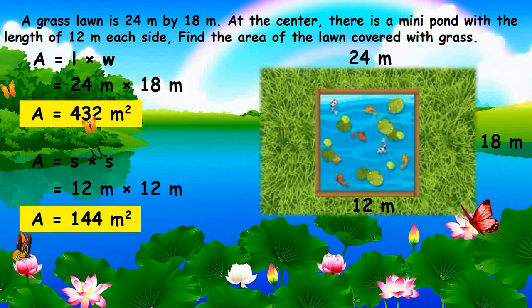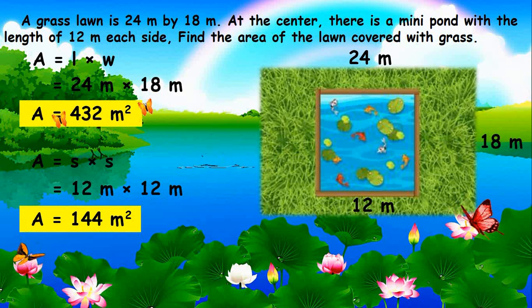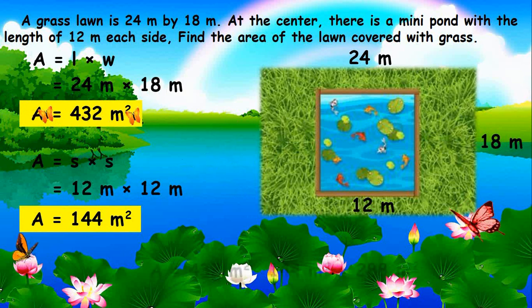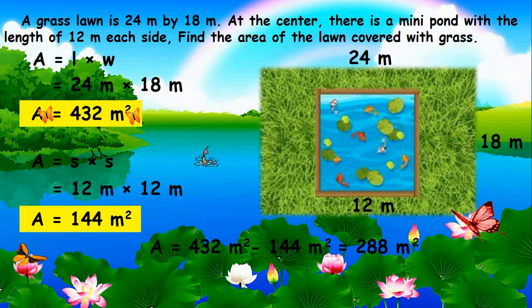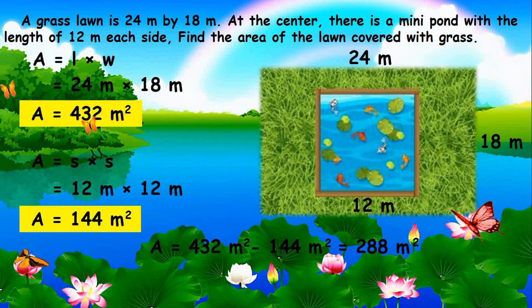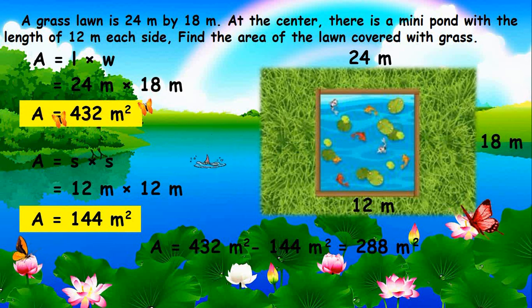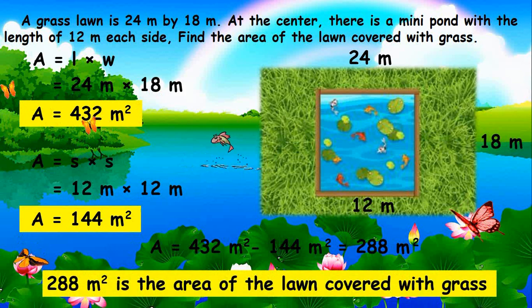Since we are looking for the lawn covered with grass, we will remove the mini pond by subtracting its area from the area of the whole lawn: 432 square meters minus 144 square meters equals 288 square meters. Therefore, the area of the lawn covered with grass is 288 square meters.